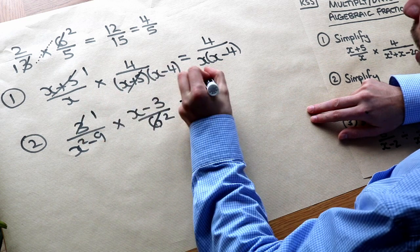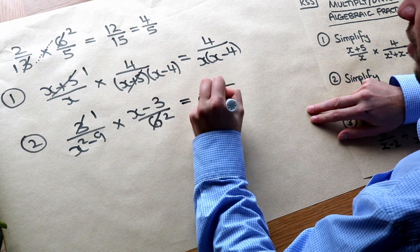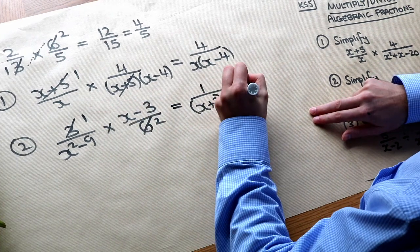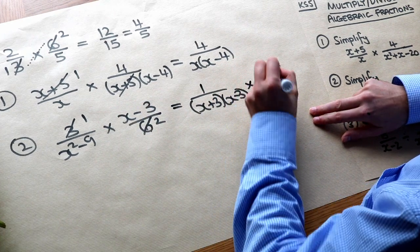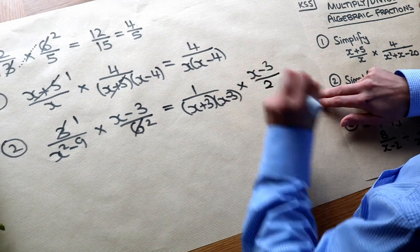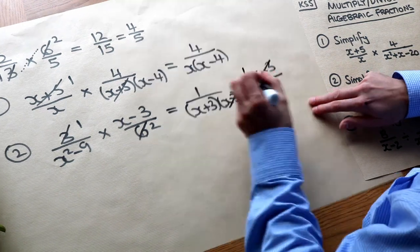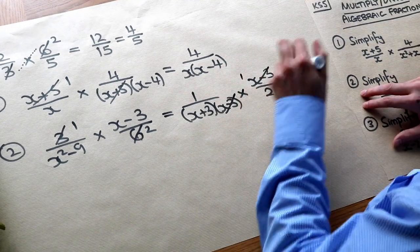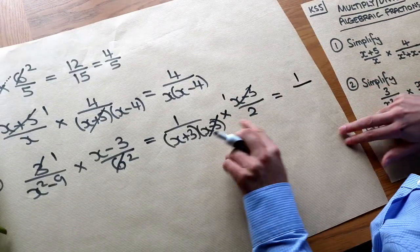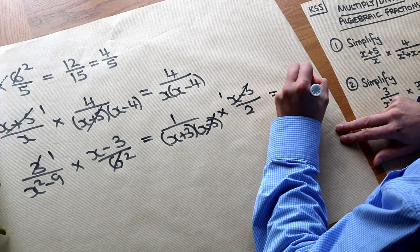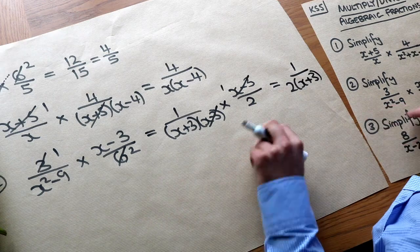So we have, we've now got 1 over x plus 3 times x minus 3, because that's the difference of two squares, times by x minus 3 over, well that's now become 2. And we can now see that that x minus 3 cross-cancels to leave just 1 there. So we're left with 1 times 1 which is 1, and we've got x plus 3 times 2 which is 2 brackets x plus 3. We could write 2x plus 6 but there's no need to.